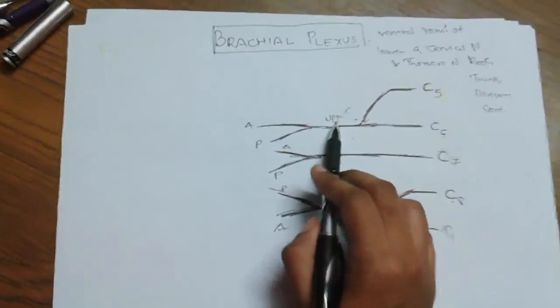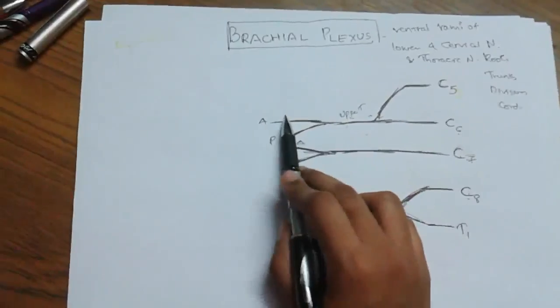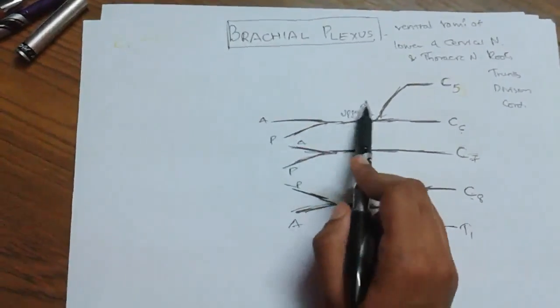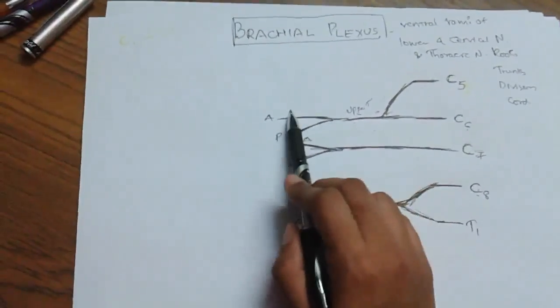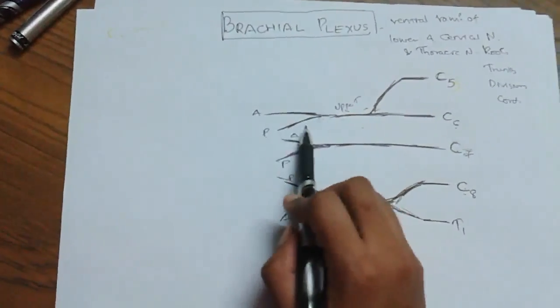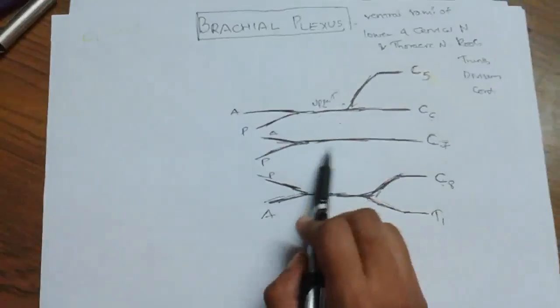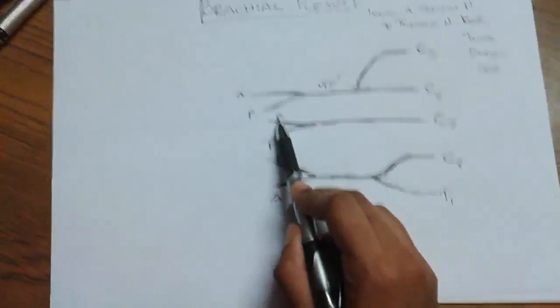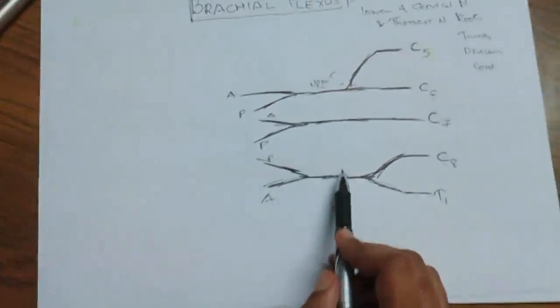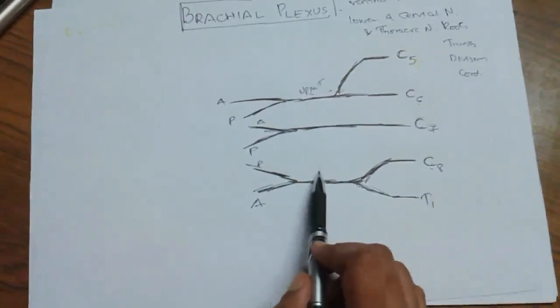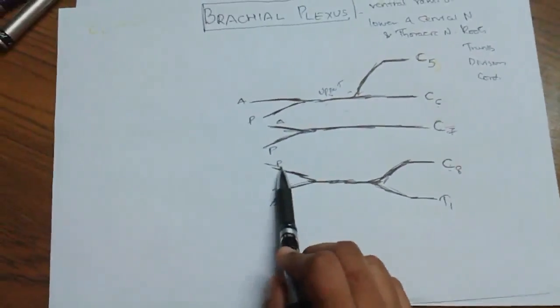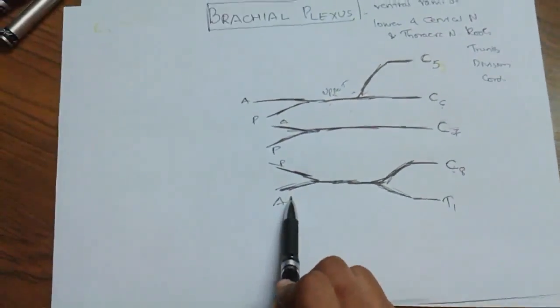Each trunk is divided into anterior and posterior divisions. The upper trunk is divided into anterior division and posterior division. The middle trunk is divided into anterior division and posterior division. The lower trunk is divided into anterior division and posterior division.